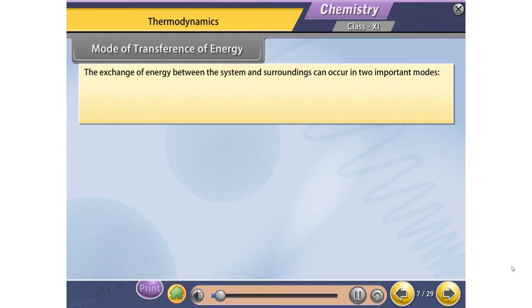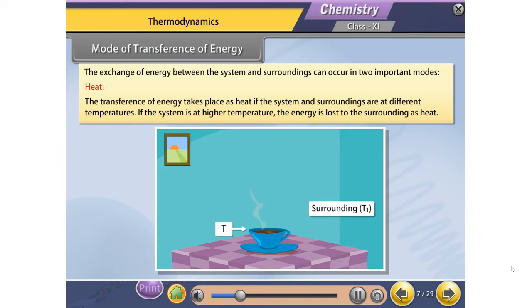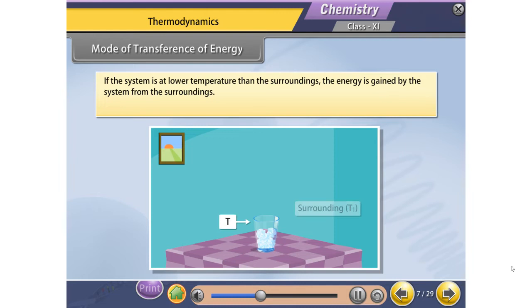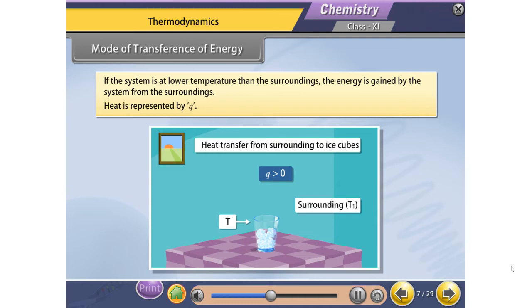The exchange of energy between the system and surroundings can occur in two important modes. The transference of energy takes place as heat if the system and surroundings are at different temperatures. If the system is at higher temperature, energy is lost to the surroundings as heat. If the system is at lower temperature than the surroundings, the energy is gained by the system from the surroundings. Heat is represented by Q.